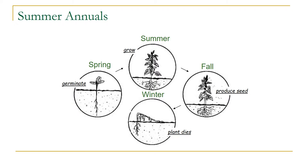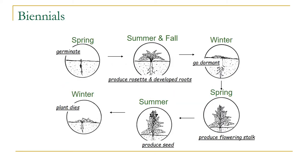Summer annuals — many mustards, for example — germinate in the spring, grow through most of the summer, and produce seeds in late summer or fall. Those seeds lie on the soil surface all winter, then start growing again in the spring. They start growth later than winter annuals and die later in the season. Biennials germinate in spring, spend their first year producing just a rosette of leaves while developing roots, survive the winter, then in the second spring produce a flower stalk, set seeds, and die. Mullein is a common example.